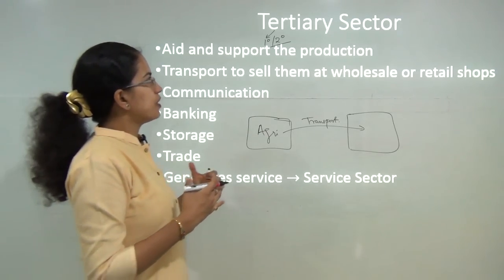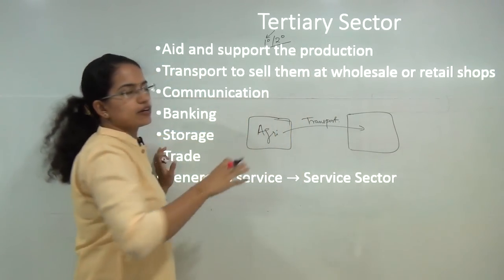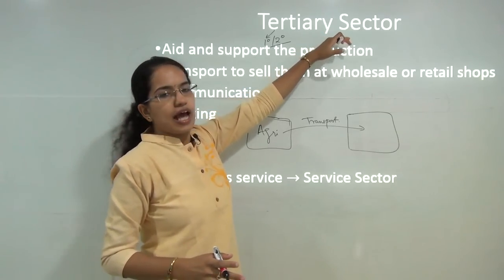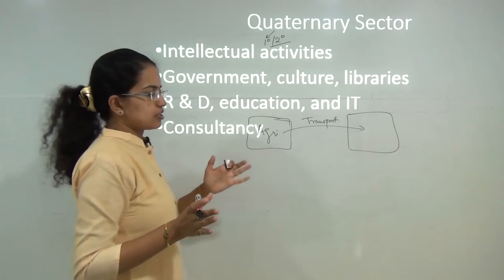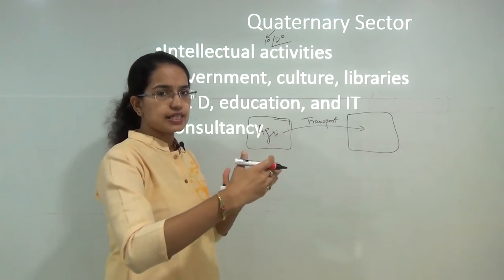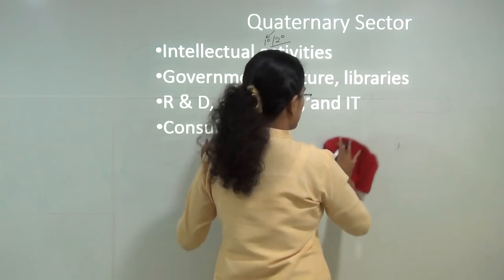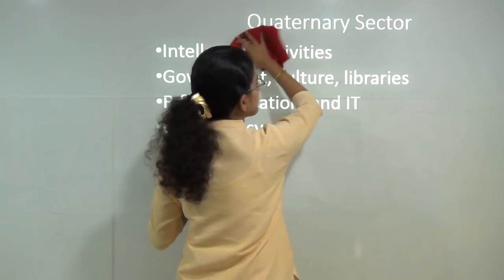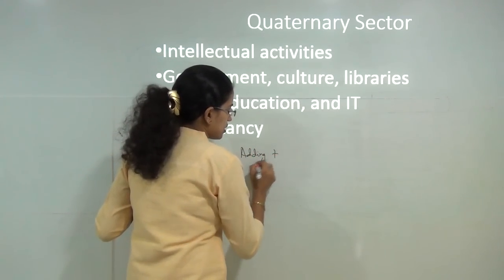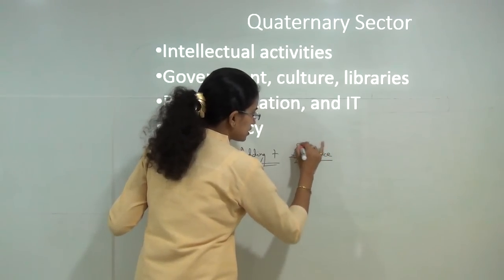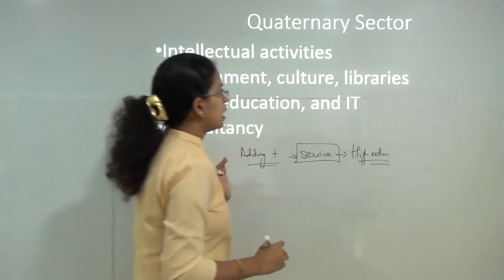Of recent, we have further classified the tertiary sector under different heads. Whatever services are generated are called the tertiary sector, which we also call the service sector — similar to the secondary sector which is also known as the industrial sector. When we extend the dimension of the tertiary sector, we get to the quaternary and quinary sectors. The quaternary sector involves intellectual activities — all research and education, research and development, IT-related jobs, and consultancy jobs would fall under quaternary sector. All kinds of higher-order services would be classified under the quaternary sector.